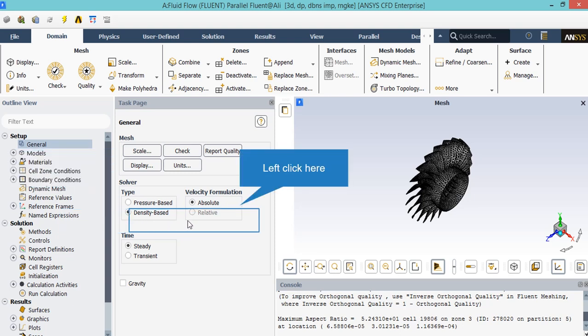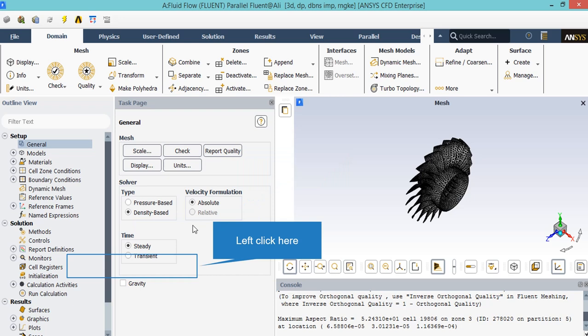Our next assumption is that the velocity formulation is in an absolute form. Next, we have chosen this simulation to be steady, which means that the results are considered to be steady and do not change as a function of time.